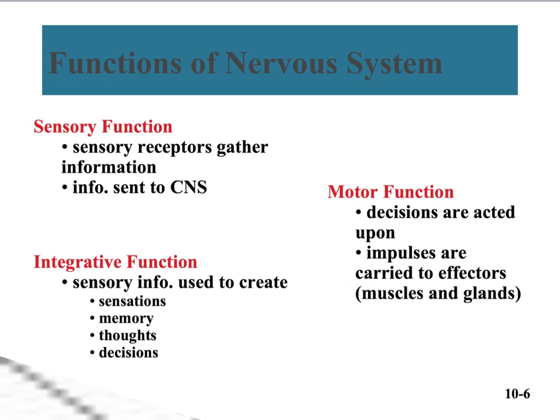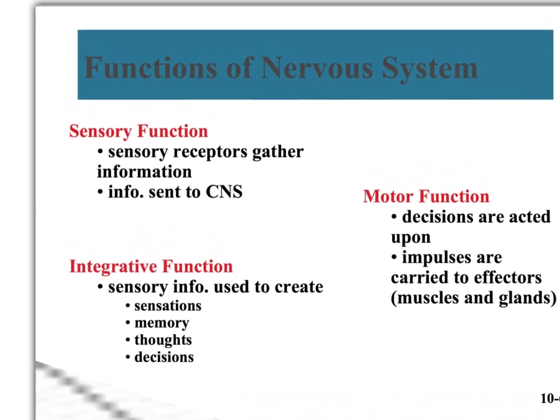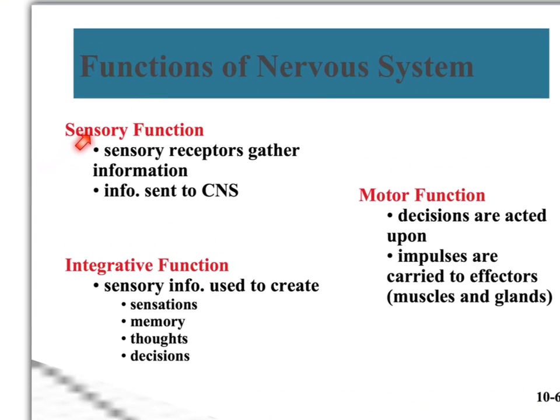Our nervous system carries out three main functions: sensory, integrative, and motor. The sensory function is all of the information coming from our peripheral nervous system — gathered by our eyes, ears, taste buds, nose, and fingertips — all of our sensory input going into our central nervous system.